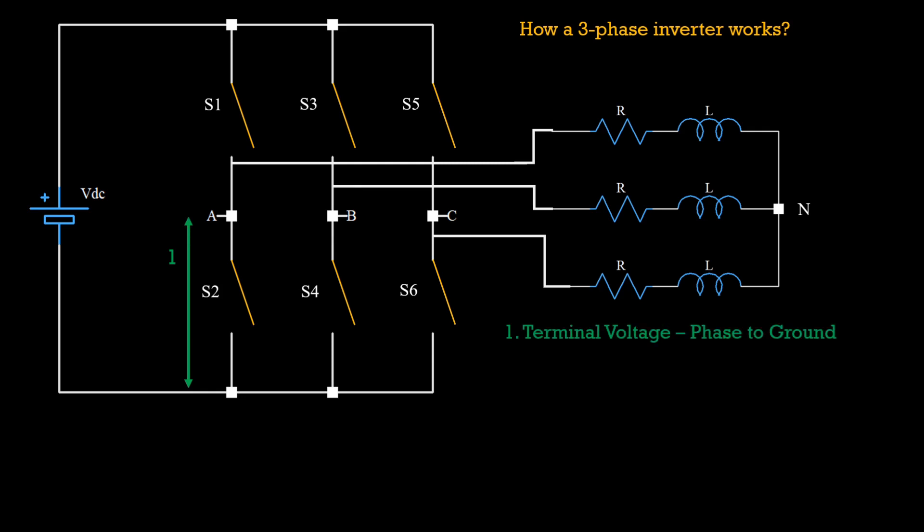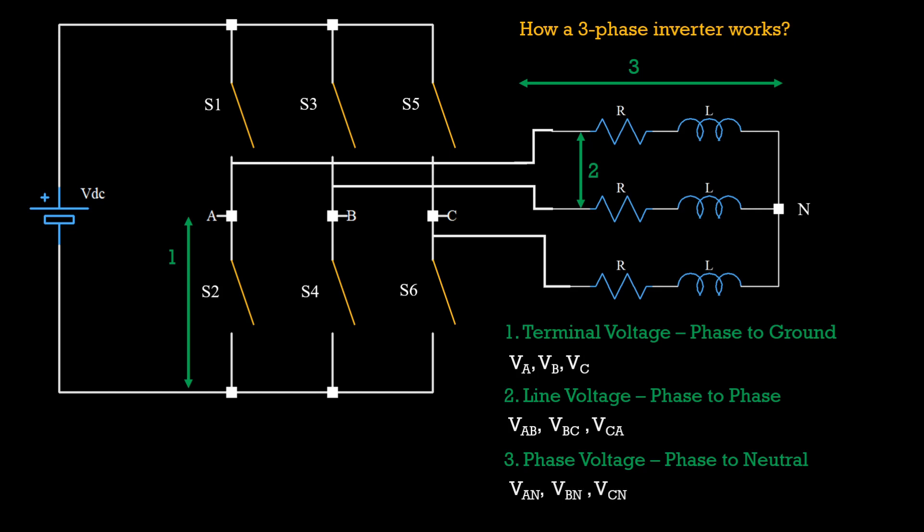Whatever we will understand about RL load will hold true for the motor also. Now, there are several voltages that we can check out. Terminal voltage is the phase to ground voltage and we will call them as Va, Vb and Vc. Line voltage or the phase to phase voltage denoted by Vab, Vbc and Vca. And finally, the phase voltage or the phase to neutral denoted by Van, Vbn and Vcn. We are interested in the phase to neutral voltage as this is what our load will see.